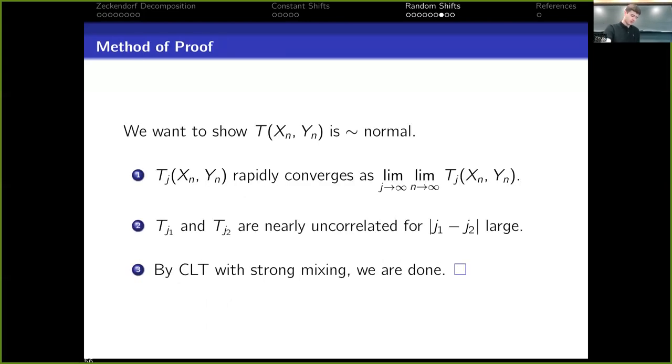So now we sort of have a method of attack for showing that τ is asymptotically normal. The first step is showing that τⱼ rapidly converges as first we send N to infinity, meaning that you look at larger and larger string numbers while fixing an index that will converge in distribution. And then once that converges in distribution, we send J to infinity afterwards. So we look at basically infinite string numbers, and then we move to larger and larger indices in these infinite string numbers. And we get rapid convergence again with exponential error thanks to Binet.